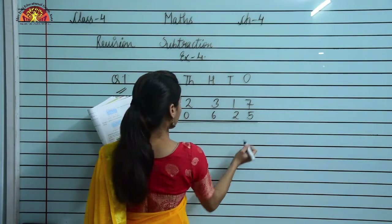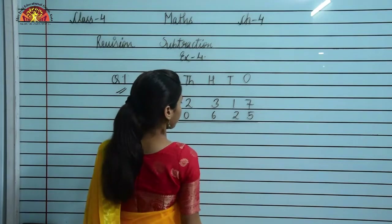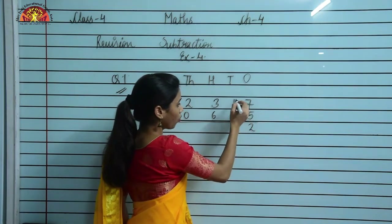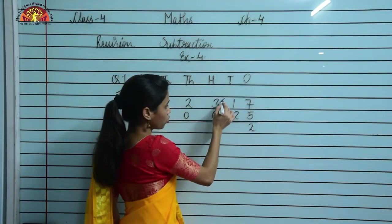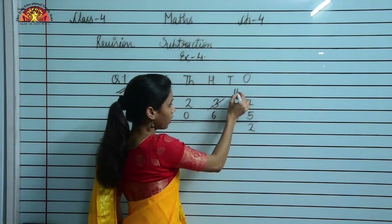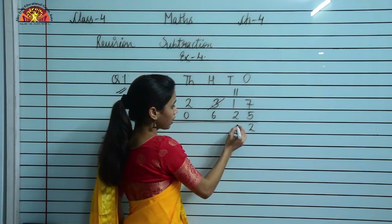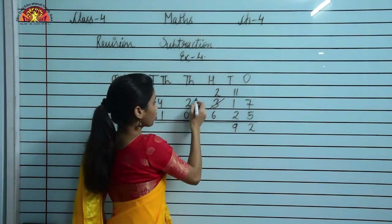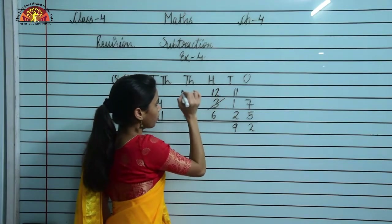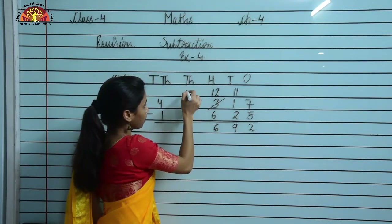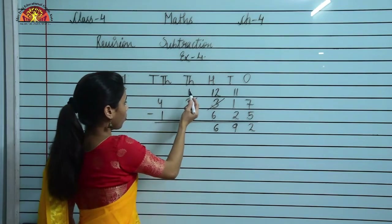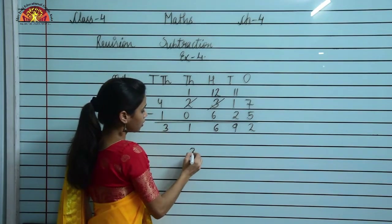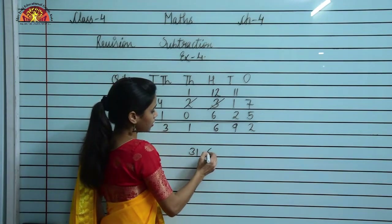Let us do the subtraction. 7 minus 5 is 2. Now 1 minus 2 is not possible, so it will take borrow from 3, giving 11. 11 minus 2 is 9. We are left with 2. Now 2 minus 6 is not possible, so it will take borrow, making it 12. 12 minus 6 is 6. We are left with 1. 1 minus 0 is 1, and 4 minus 1 is 3. Therefore, the answer is 31,692.